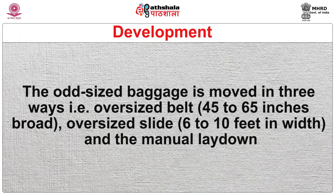The two main types of mechanical baggage claim areas are flat plate units comprising configurations such as LT or U-shape, where bags are loaded on the secured non-public side then pass through the wall and are claimed by passengers; and sloped bed units, which can be present anywhere and whose feed conveyors are able to reach units from above or below. Odd-sized baggage is moved in three ways: an oversized belt (45 to 65 inches broad), an oversized slide (6 to 10 feet in width), and manual lay down.